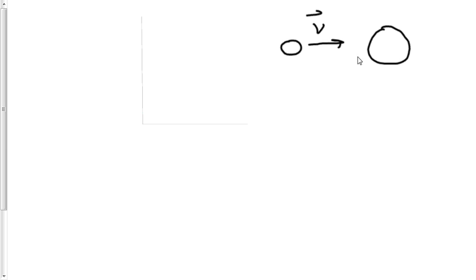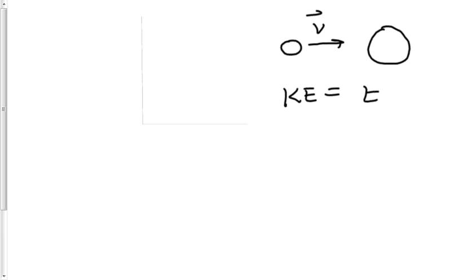How does that relate to the stopping distance between these two? How close does that particle get? Of course, the faster the initial velocity, we expect it to get closer. Essentially, we have an electric potential energy and kinetic energy conversion. So the alpha particle has kinetic energy initially, and then it converts to electric potential energy as it comes to a complete stop and is reflected backwards.